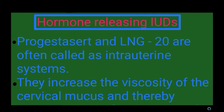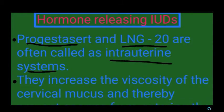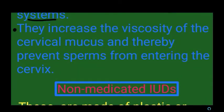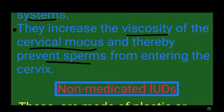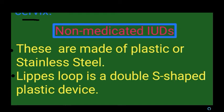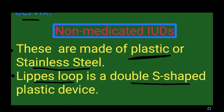Hormone releasing IUDs — such as Progestasert and LNG-20, often called intrauterine systems — increase the viscosity of cervical mucus, thus preventing sperm from entering the cervix. Non-medicated IUDs do not contain any medicine such as hormones or copper; they are made up of plastic or stainless steel and form a double-S shaped plastic device.